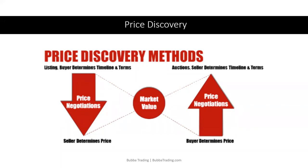You basically do price discovery every day. When you go to the grocery store, you're doing a method of price discovery. You're buying a loaf of bread — they're asking $1.79. If you're willing to pay it, you discovered the right price. If it's too expensive and you think you can buy it cheaper, you'll go to another store. The same things happen in markets.